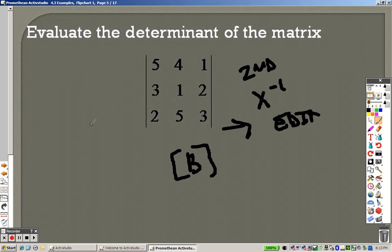Fill in every single number going across and press enter after it. So, 5, enter, 4, enter, 1, enter, 3, enter, 1, enter, 2, enter, 2, enter, 5, enter, 3, enter. Now that you have the matrix filled in, press 2nd and mode. 2nd and mode takes you back to the screen that you were originally at.